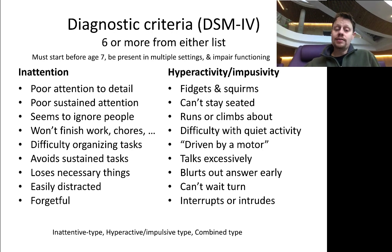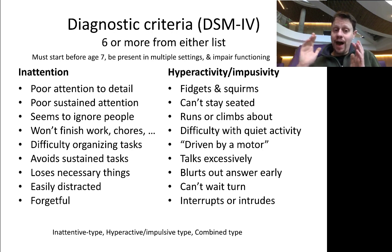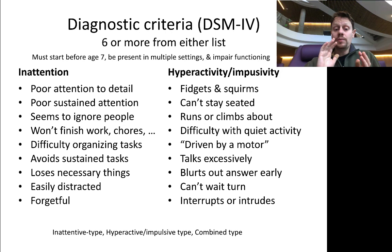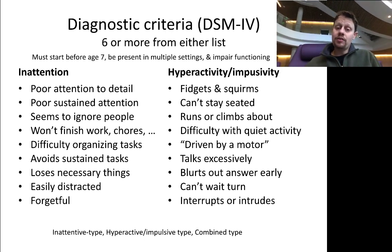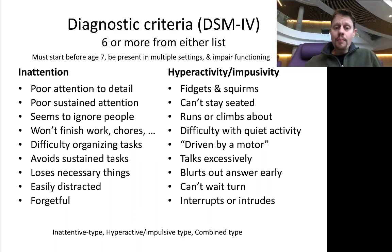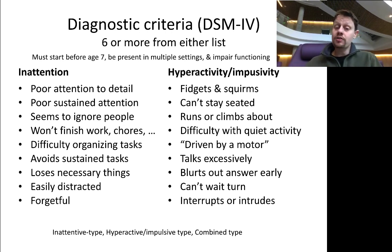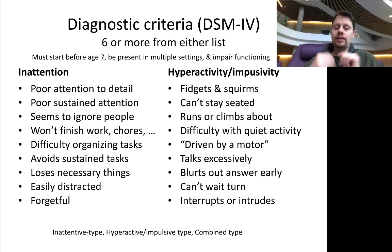Conversely, if somebody has six or more from the right list and fewer than six on the left, then they are diagnosed with hyperactive/impulsive type, meaning their ADHD is primarily characterized by hyperactivity and impulsivity. The third possibility is that somebody could have six or more from the left plus six or more from the right, in which case they're diagnosed with combined type — meaning they have both significant inattentive symptoms and significant hyperactive/impulsive symptoms. So there are three types.